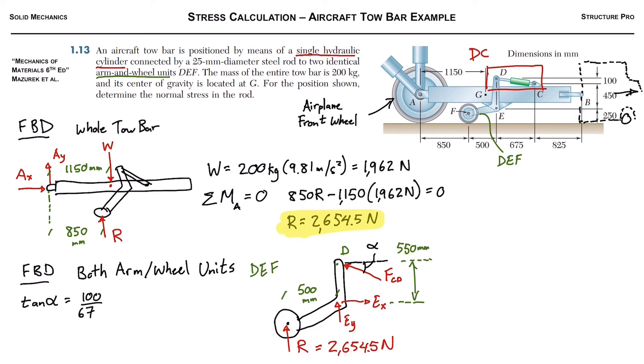So tan of alpha, which you know, SOHCAHTOA, so you've got opposite over adjacent, so it's 100 divided by 675. So you can look at that figure, you see the 100 and the 675 there. So that allows us to solve for alpha, and alpha is 8.43 degrees. So put it there.